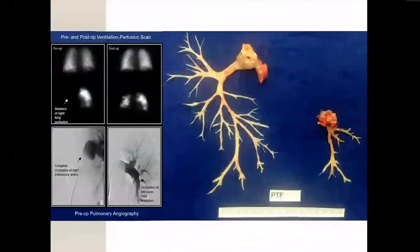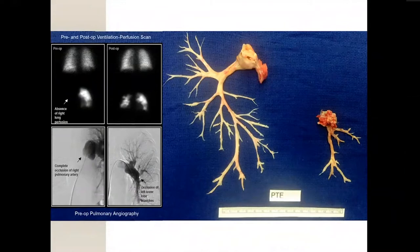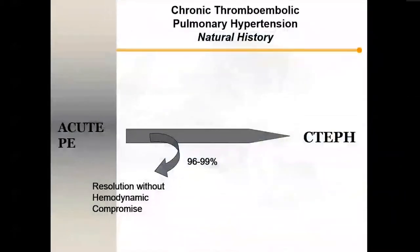This is our case shown earlier. You can see the absence of perfusion. Shortly after surgery, there's perfusion in the right lung after removing this thrombus. Here is the complete obstruction, with some occlusions in the lower lobe, and that matches our specimen that we've removed.